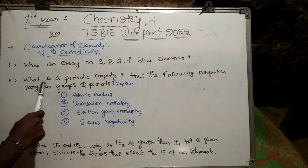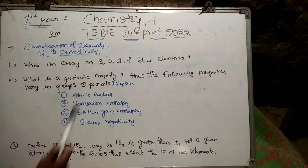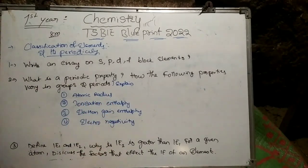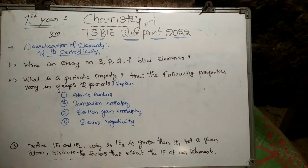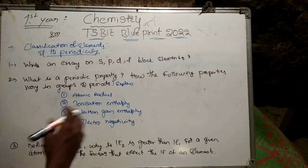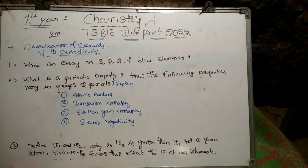The second question is: what is periodic property? How do the following properties vary in groups and periods? Explain. The properties include atomic size, ionization enthalpy, electron gain enthalpy, and electronegativity. This is an important 8-mark question on periodicity in groups and periods.